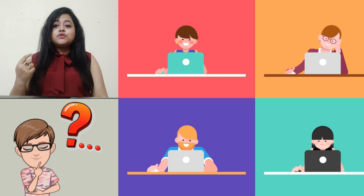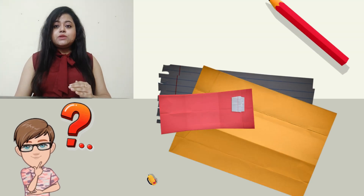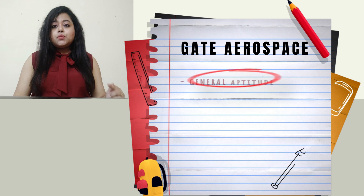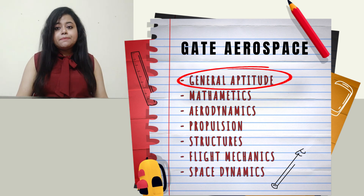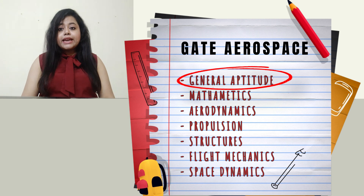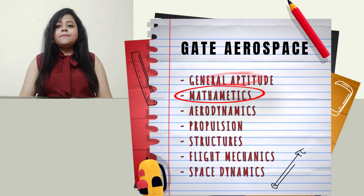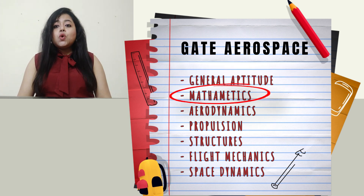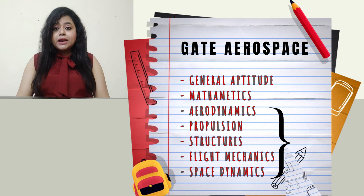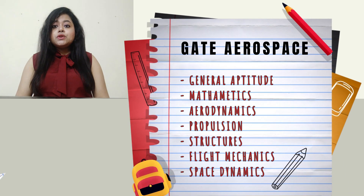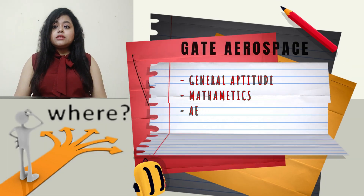After collecting all the materials, many of you get stuck on where to start. In GATE Aerospace there are many syllabus topics. First start with General Aptitude, which is common for all departments. Second is Mathematics. Then coming to the core syllabus, you have Aerodynamics, Propulsion, Structures, Flight Mechanics, and Space Dynamics.